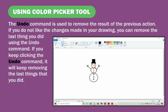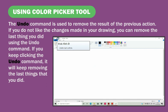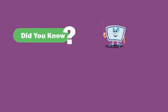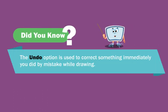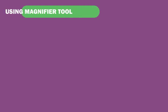The Undo command is used to remove the result of the previous action. If you do not like the changes made in your drawing, you can remove the last thing you did using the Undo command. If you keep clicking the Undo command, it will keep removing the last things that you did. The undo option is used to correct something you did by mistake while drawing.